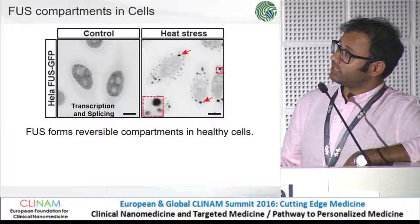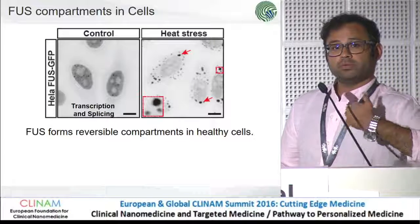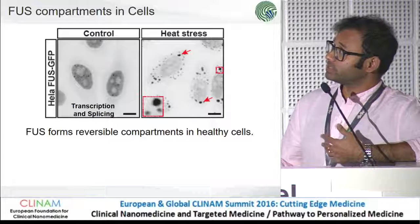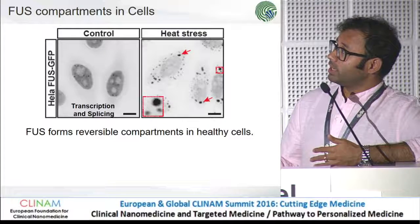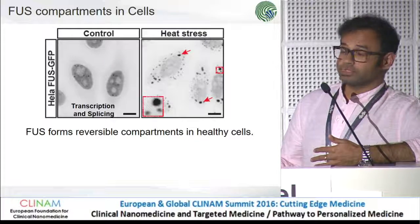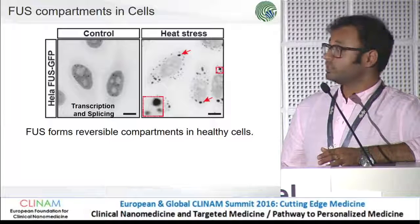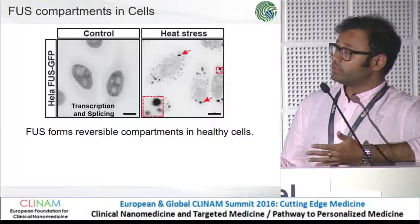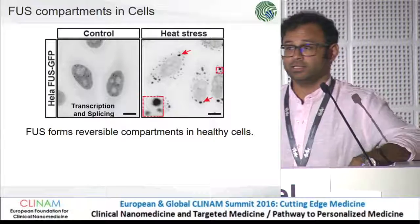In a normal state, you see that everything is inside the nucleus, where FUS plays a role in transcription splicing. But when you introduce some kind of stress to the cell — heat stress in this condition — most of the FUS rushes out to the cytoplasm and forms these kind of compartments. And once the stress has been taken care of, these compartments redissolve and rush back to the nucleus. So FUS forms reversible compartments in healthy cells.